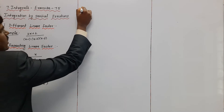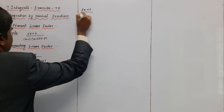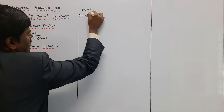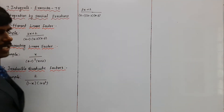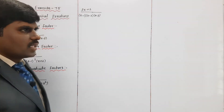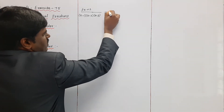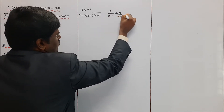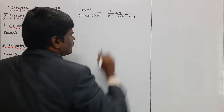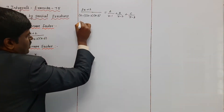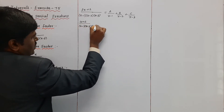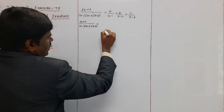The first example is (3x + 2) divided by (x − 1)(x − 2)(x − 3). Here x = 1, x = 2, and x = 3 are different linear factors. We introduce constants A/(x−1) + B/(x−2) + C/(x−3). The left-hand side is (3x + 2)/[(x−1)(x−2)(x−3)].